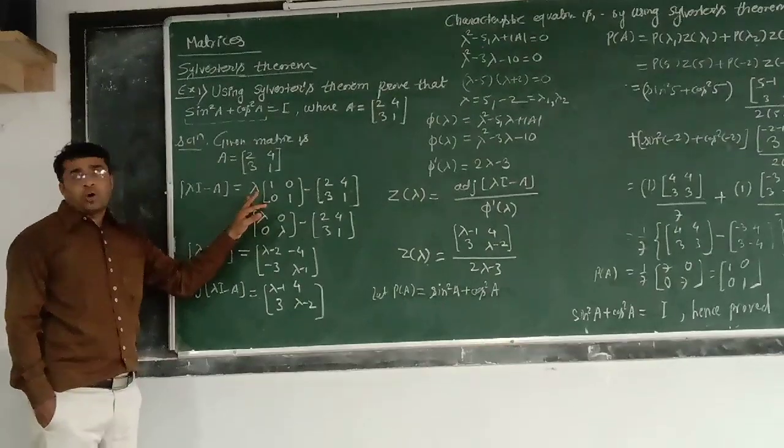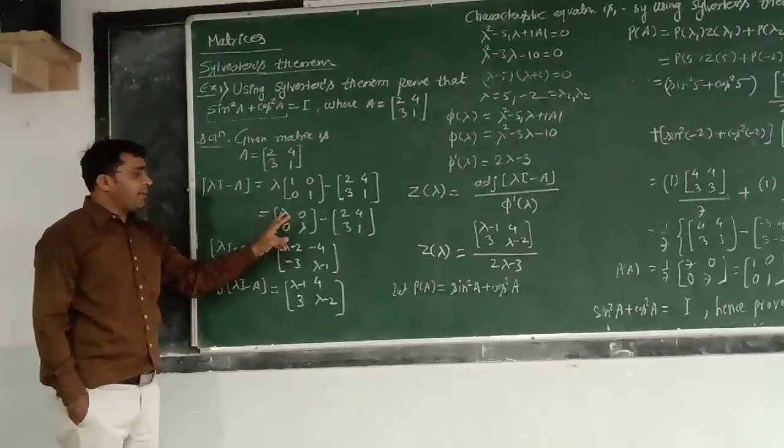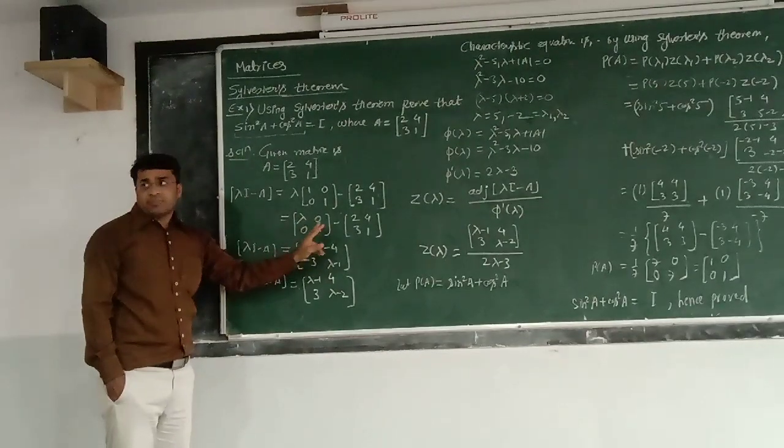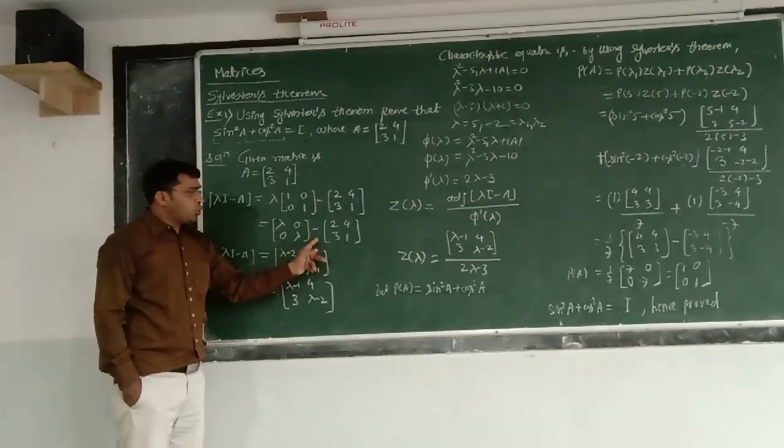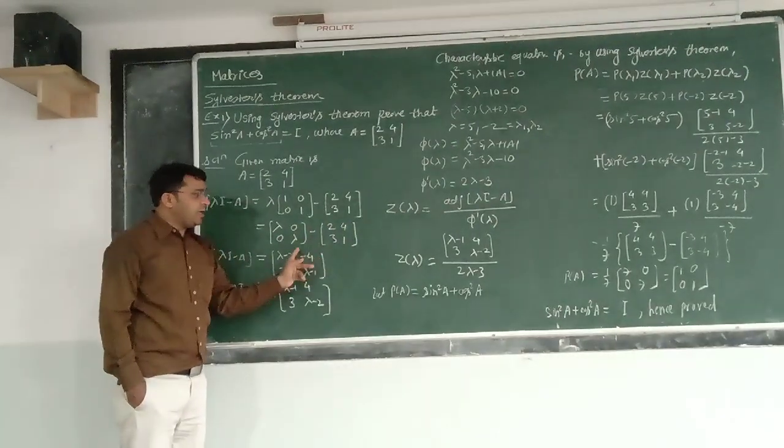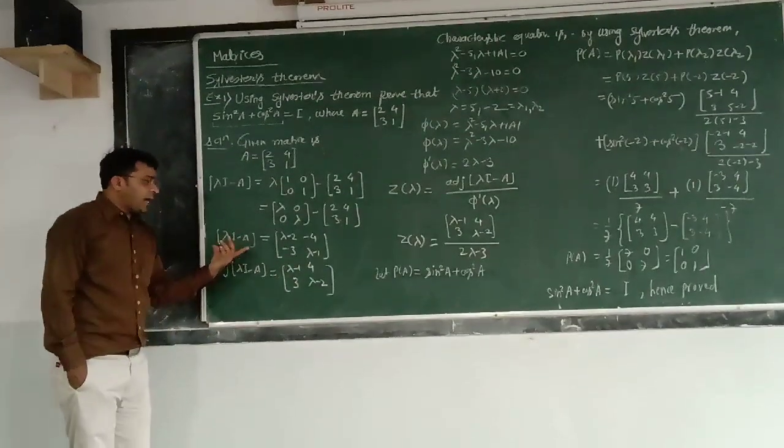Now, a lambda is a scalar quantity, so we multiply this lambda to these four elements, so that would be lambda 0, 0 lambda. Take a subtraction of these two matrices, then we are having lambda minus 2, 0 minus 4, 0 minus 3 and lambda minus 1. So we got this matrix, but it is lambda I minus A.